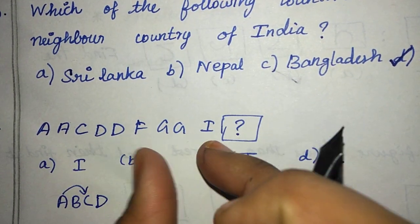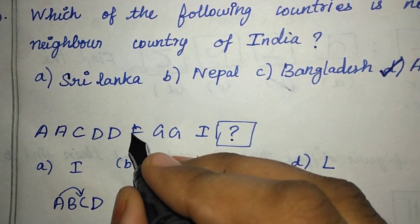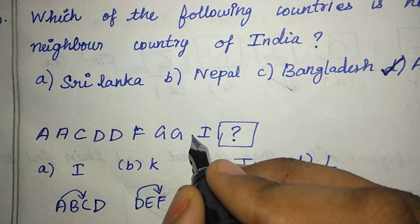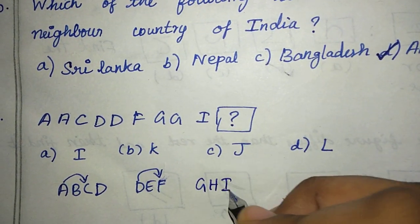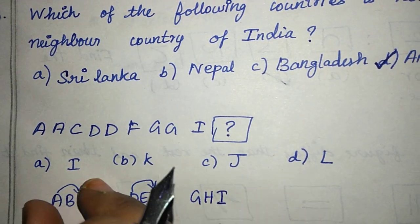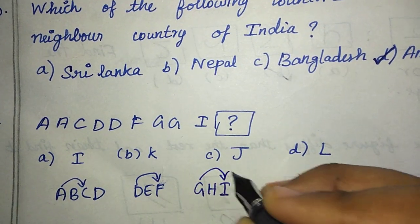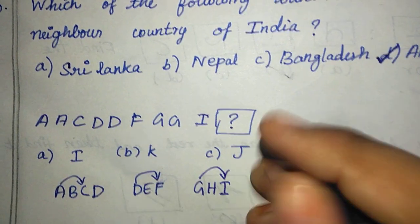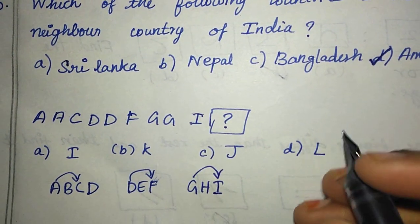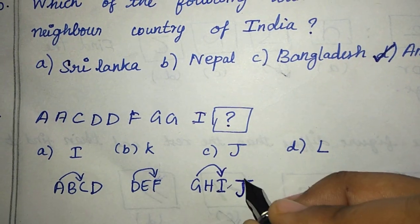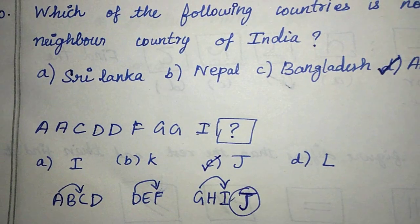So we have this order here. Then we have F, we have this continuous. And G, another component is H, I. So we have one other method. The i is now added in the same way. So the i is now added in the same way. Then J is the right answer. For the option, option C, J is the right answer.